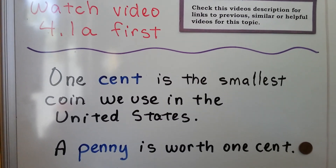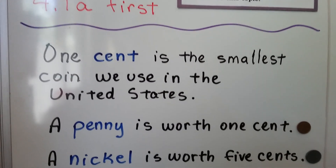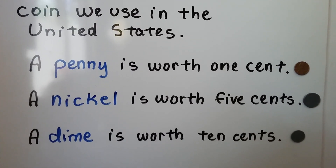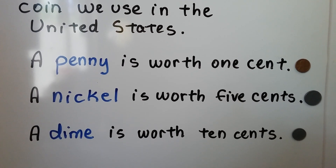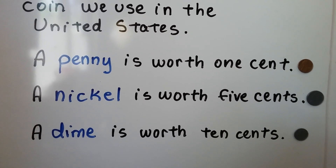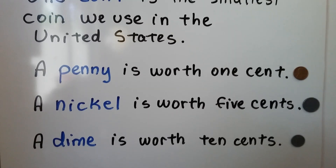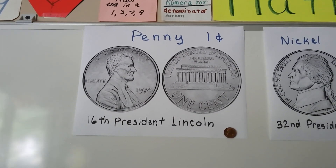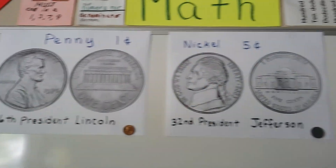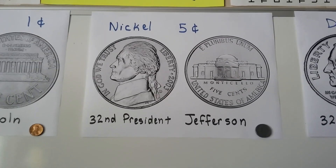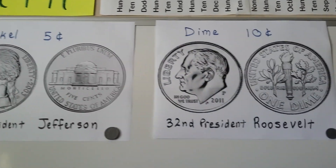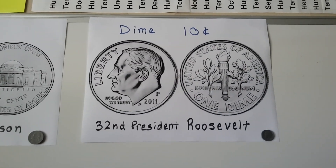One cent is the smallest coin we use in the United States. A penny is worth one cent. A nickel is worth five cents, and a dime is worth ten cents. We talked about these in the last video. This is what a penny looks like close up — it's one cent. This is what a nickel looks like close up — that's five cents. This is what a dime looks like close up, and that's ten cents.